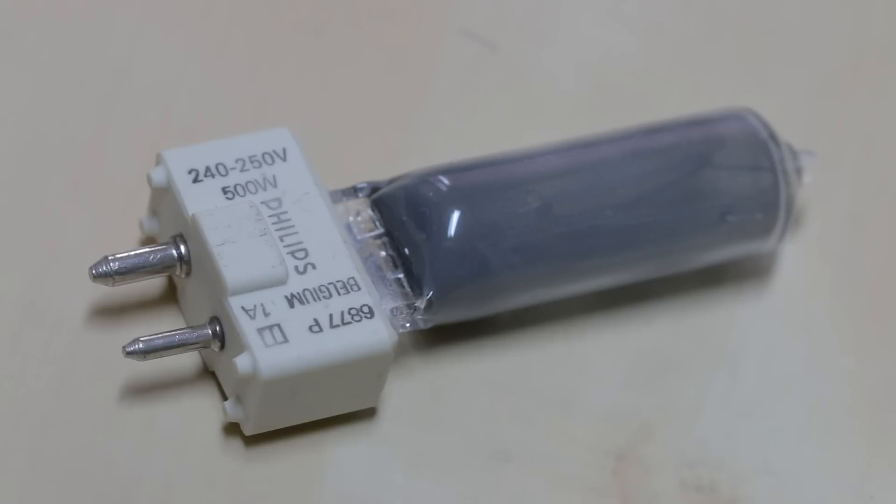When it went pop it took out a 32 amp breaker, so I must have had quite a nice arc in there. Now instead of throwing it in the bin, I'm going to smash it open and see if we can get a nice close-up of the filament.